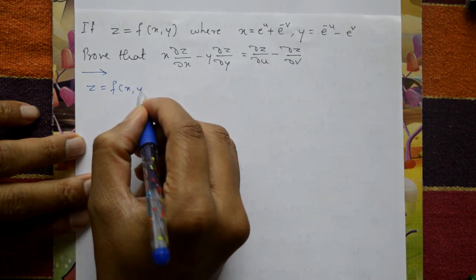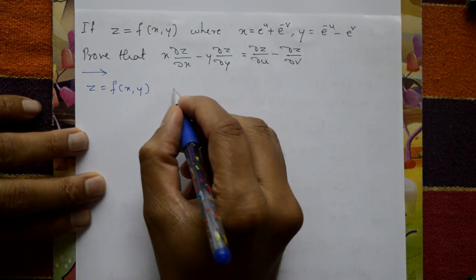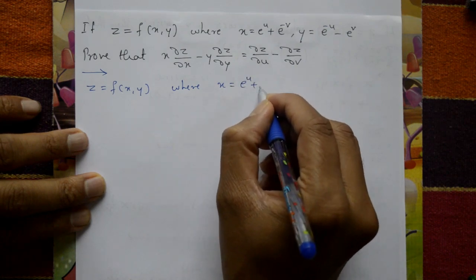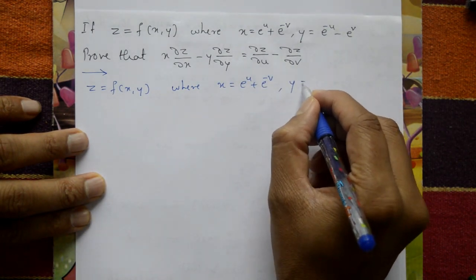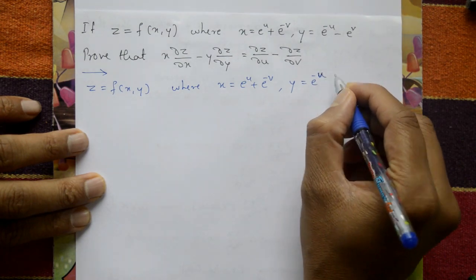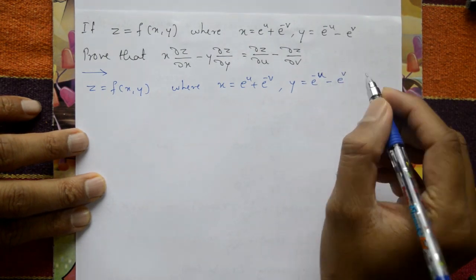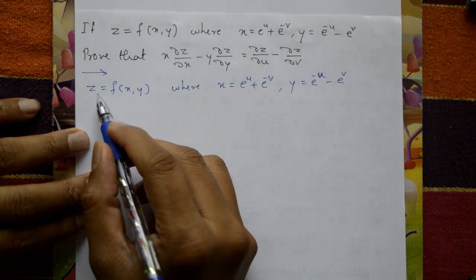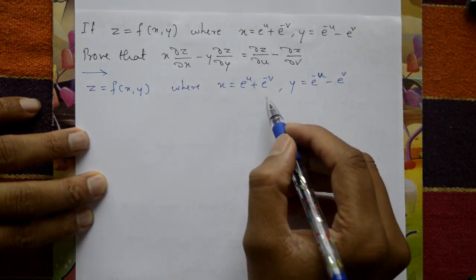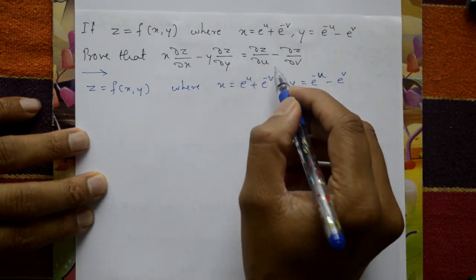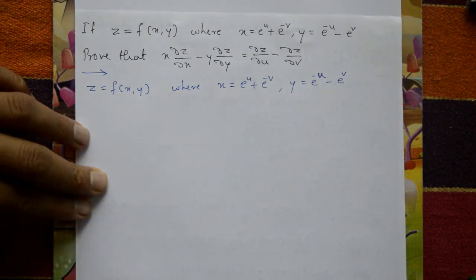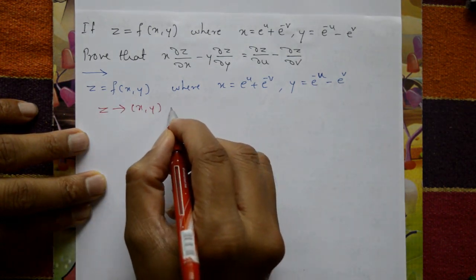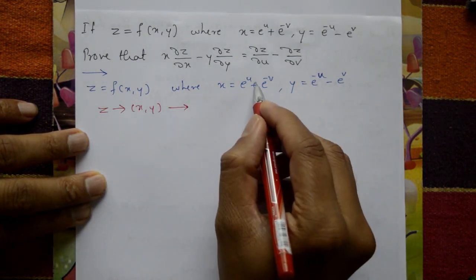Solution: Z is a function of xy, where x equals e raised to u plus e raised to minus v, and y equals e raised to minus u minus e raised to v. Consider the right hand side, because if we differentiate the left hand side with respect to x and y we will not get the proper answer. Z is a function of xy, and x and y are functions of u and v, so Z is a composite function of u and v.